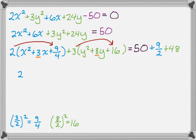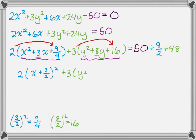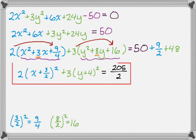Now each set of parentheses should give perfect square trinomials. So I have 2 times (x + 3/2) squared — to factor a perfect square trinomial, take the square root of the squared term, which is x, and add half the coefficient of the linear term, which is 3/2. Then plus 3 times (y + 4) squared equals the result — just work that out and you get the final answer.